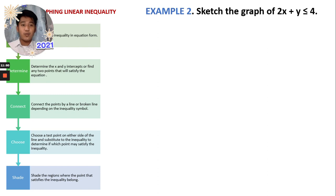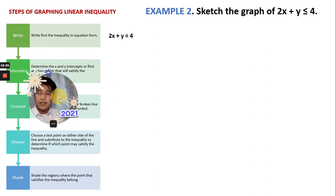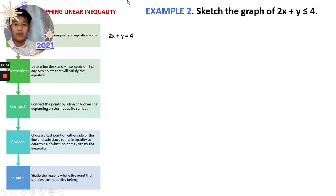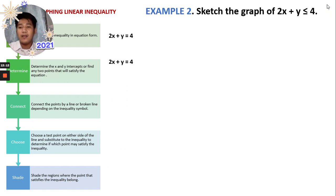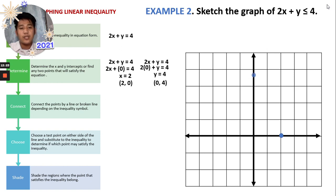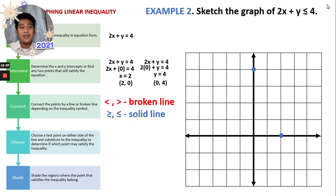Example 2: Sketch the graph of 2x + y ≤ 4. Step 1: transform the inequality into equation form by changing the inequality symbol to an equal sign. Step 2: get the x and y intercepts — we have (2, 0) and (0, 4). Then graph those points. Step 3: determine the line type. We use a solid line because the inequality symbol is less than or equal to.